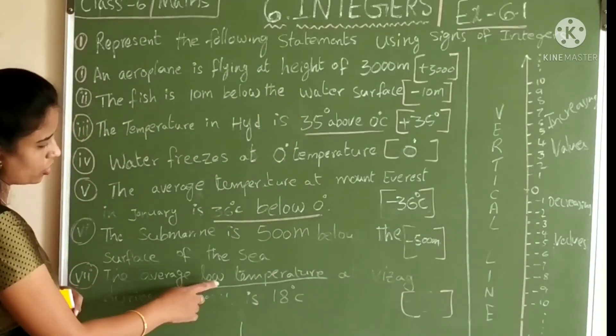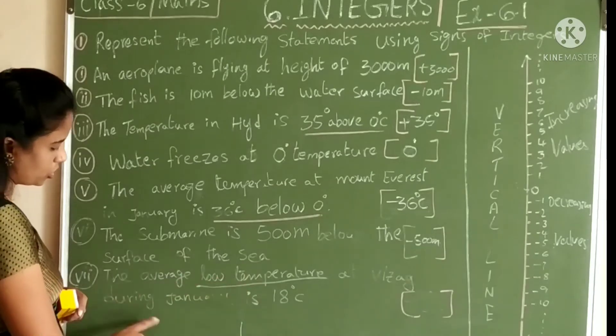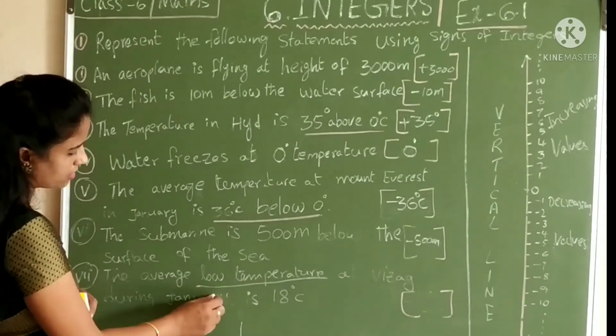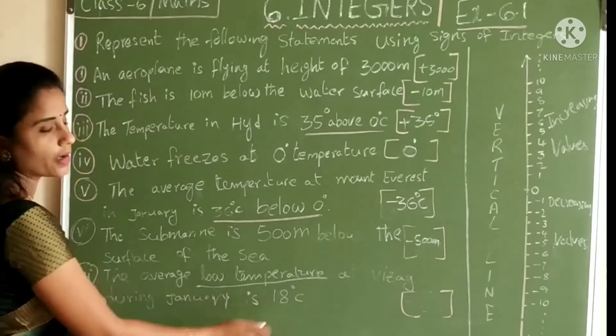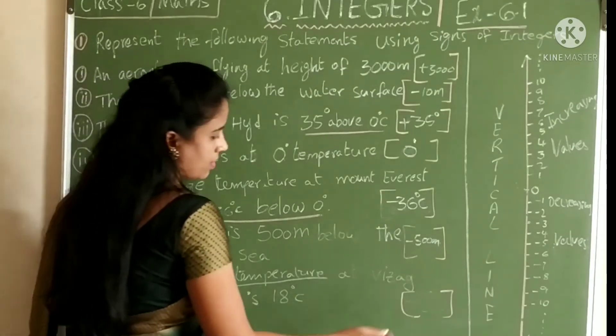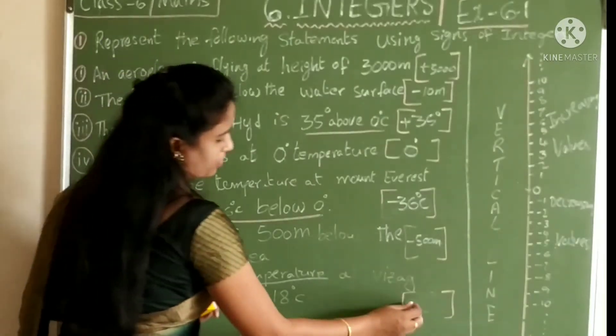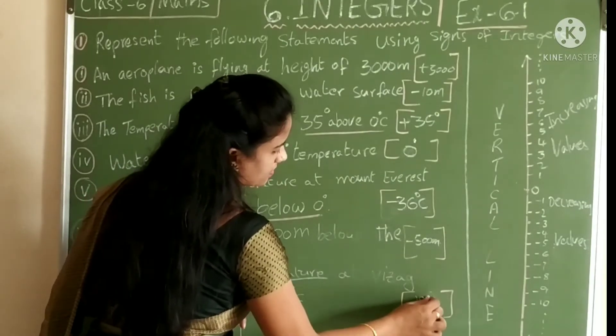The average low temperature at Vizag during January is 18 degrees Celsius. This is also low temperature. Low temperature means minus 18 degrees Celsius.